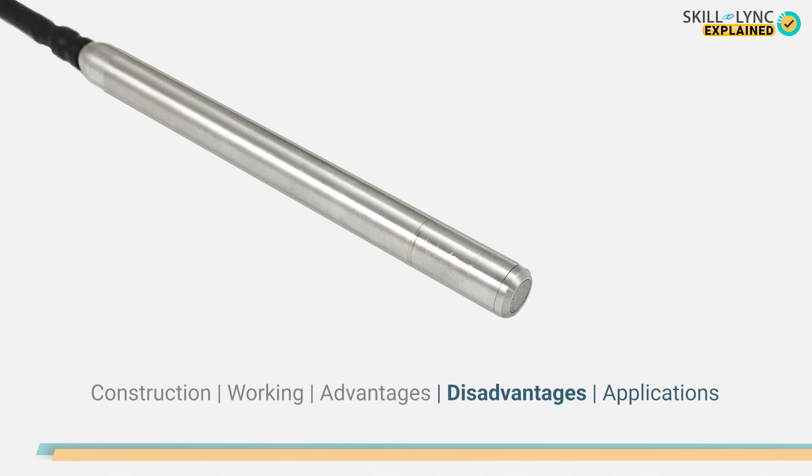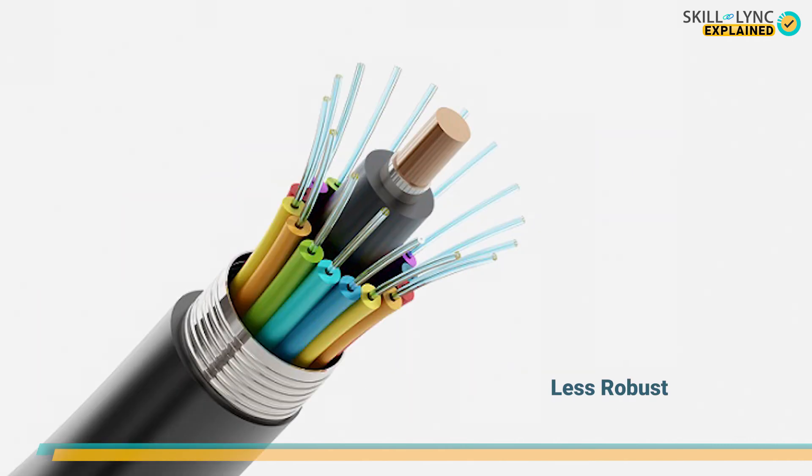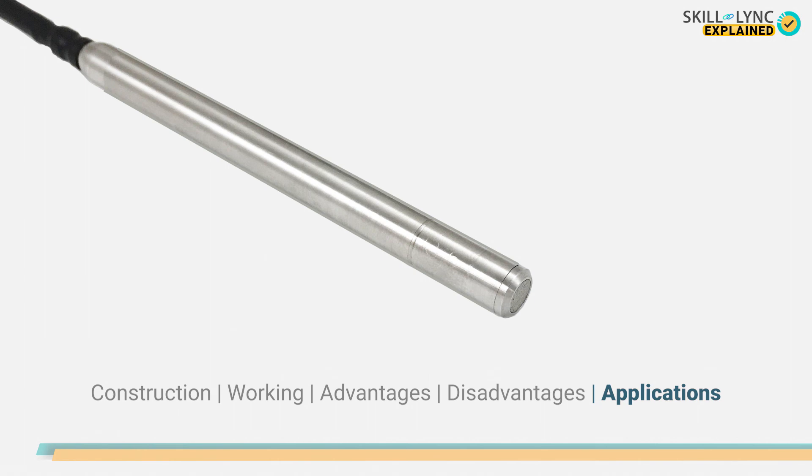Next, we have the disadvantages of the fiber optic pressure sensor. The fact that they are highly sensitive can sometimes make them susceptible to acoustic waves. Furthermore, their thin size makes them less robust when compared to other sensors.